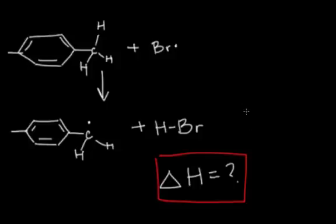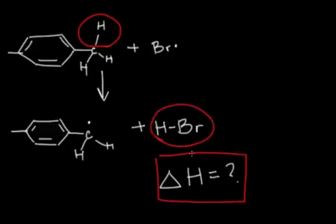When we do this kind of problem, it's important to look at what kind of bonds are broken. In the reactants, we see that a carbon-hydrogen bond is broken, and in the products, we see that a hydrogen-bromine bond is being formed.